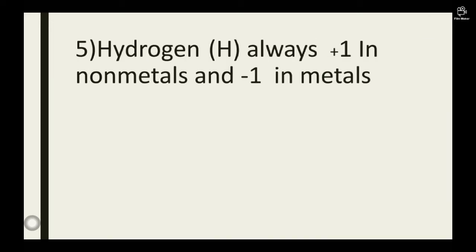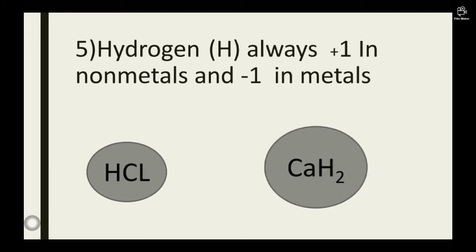Rule 5: Hydrogen always is plus 1 in non-metals and negative 1 in metals. Consider these compounds: HCl and CaH2. In HCl, you realize that Cl is a non-metal. Hence, the oxidation number of hydrogen would be plus 1. In CaH2, Ca is a metal, and hence the oxidation number of hydrogen would be negative 1.